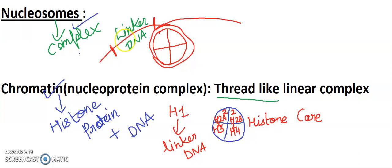If we talk about histone core, there are 146 base pairs wrapped around it. And the 54 base pairs act as linker DNA.